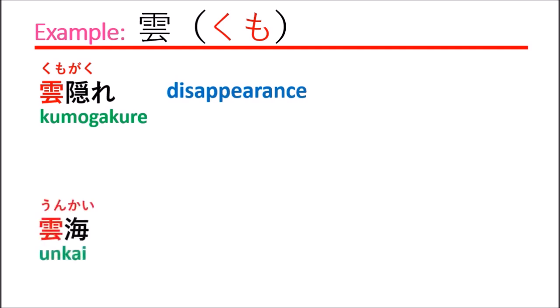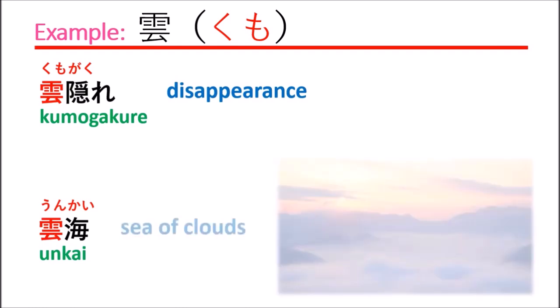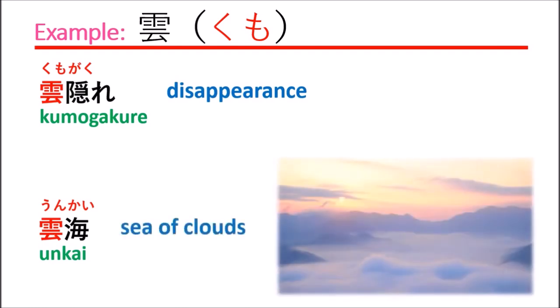The next example is unkai, which means sea of clouds.